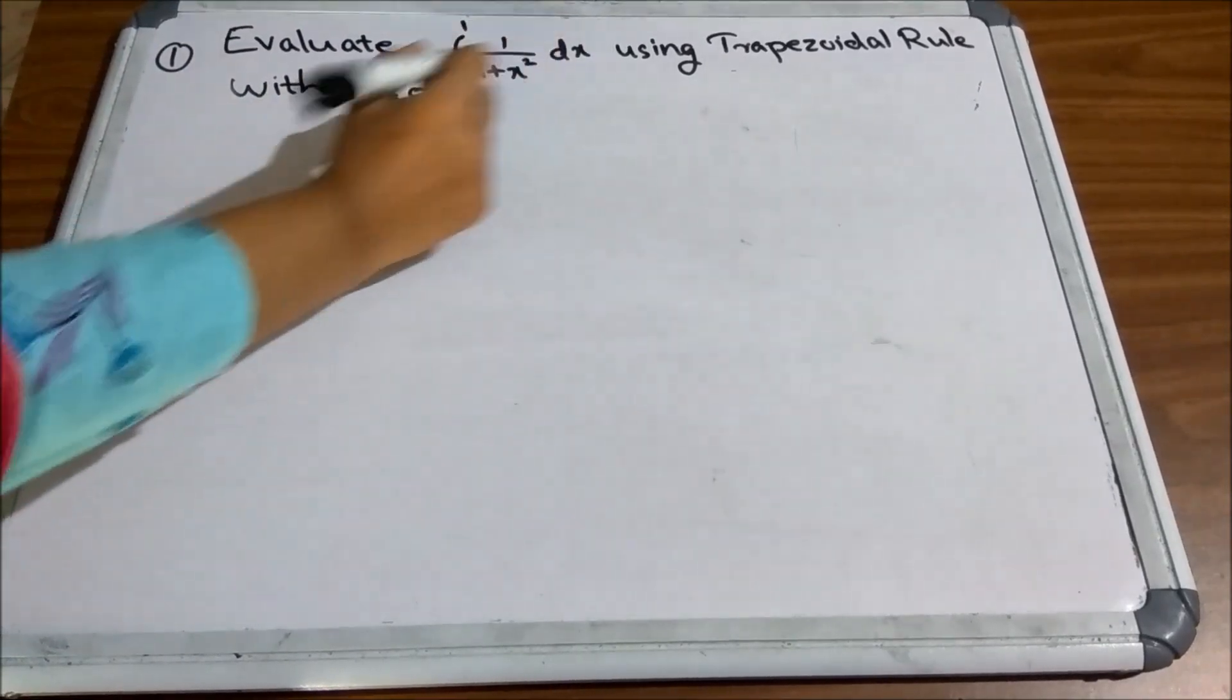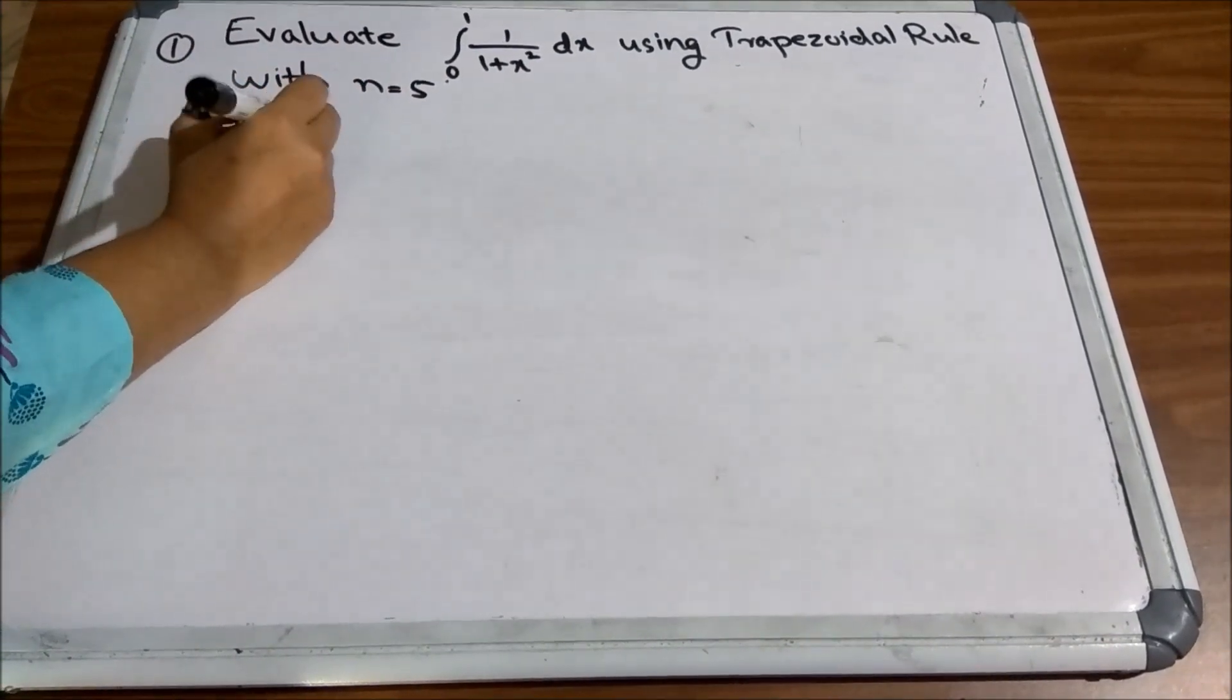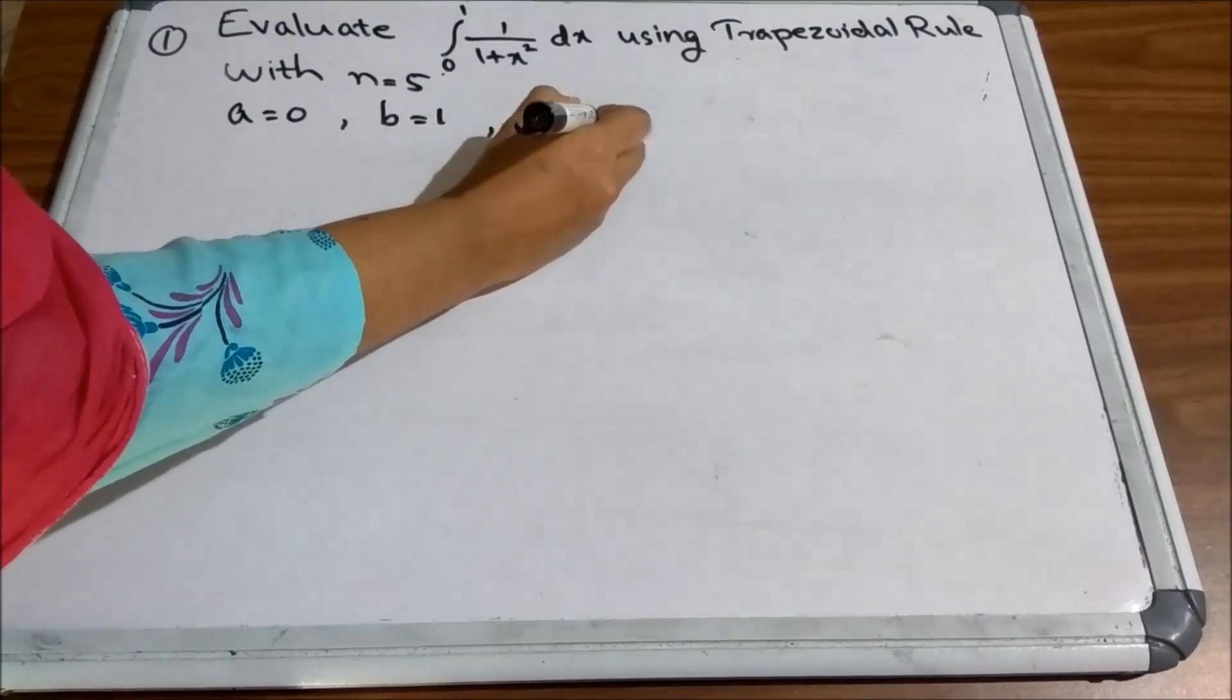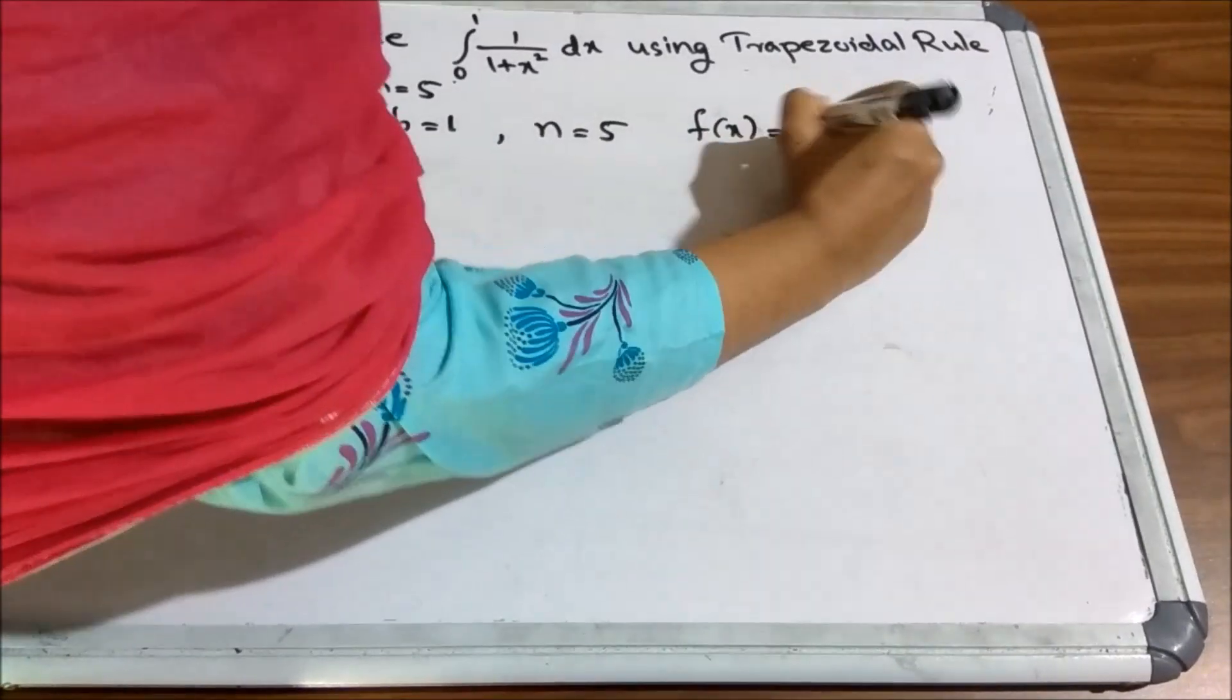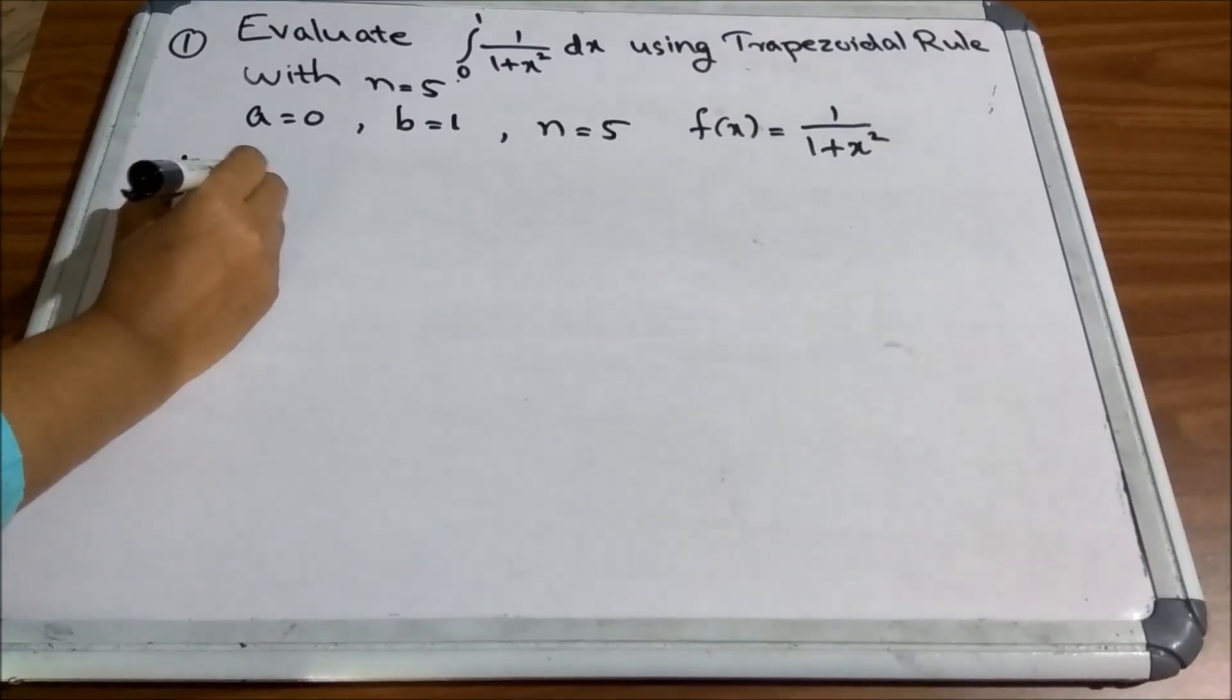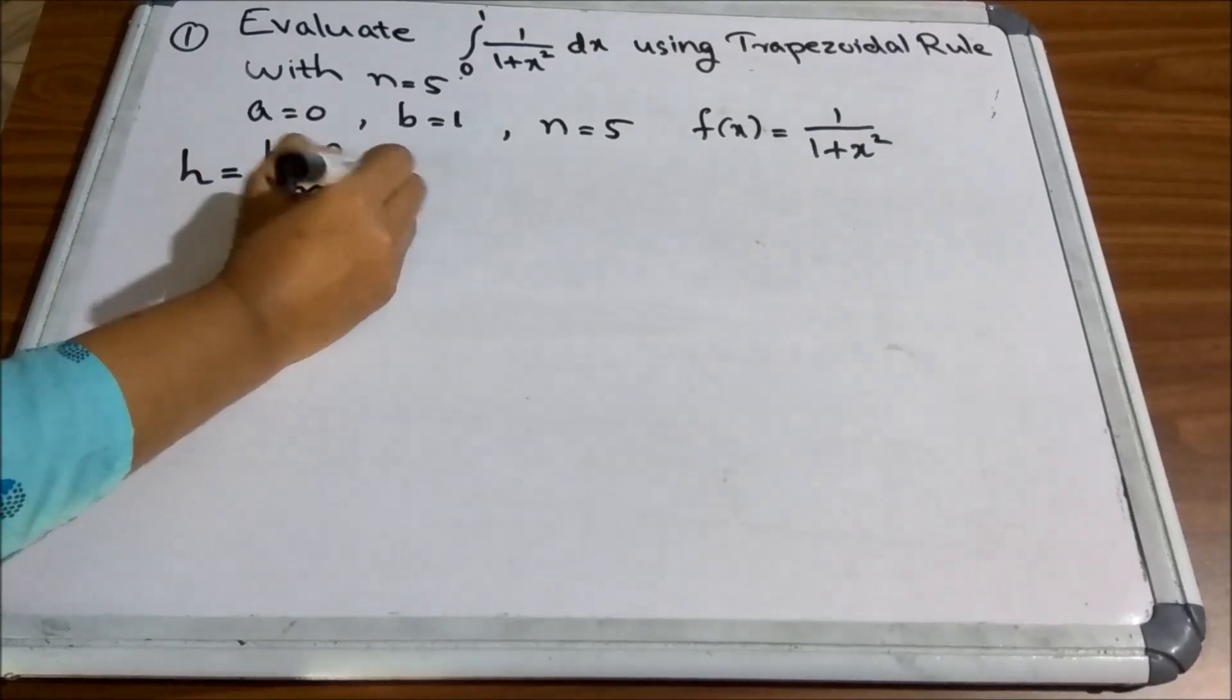So, here you can see that the lower limit is 0 and upper limit is 1. That is, a is equal to 0, b equal to 1, n equal to 5. And our function f of x is equal to 1 by 1 plus x square. So, first you have to find out the length of the subinterval h. h is equal to b minus a by n.